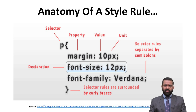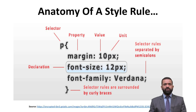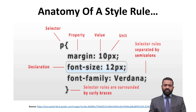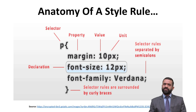In this example, 'p' is the selector. Between the curly braces in the declaration section, we have: margin as the property with value 10 pixels, font-size with value 12 pixels, and font-family with value Verdana. Rules are separated by semicolons — after each value a semicolon follows. Rules are surrounded by curly braces.